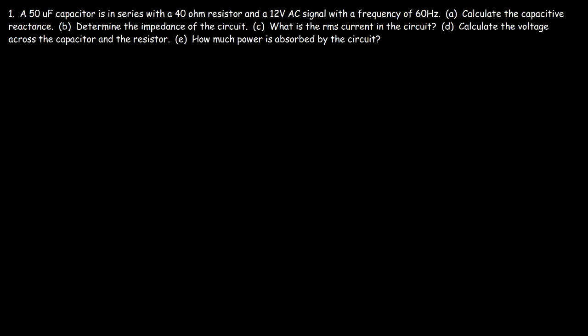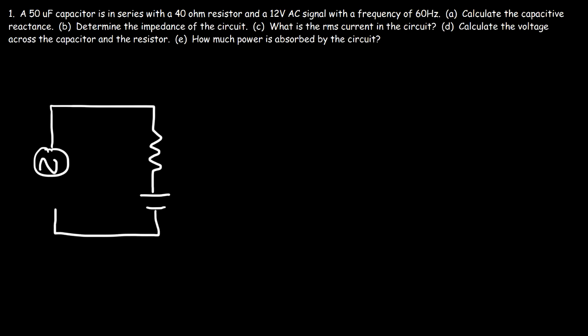In this video I'm going to focus on capacitive reactance. We have a 50 microfarad capacitor in series with a 40 ohm resistor and a 12 volt AC signal that has a frequency of 60 Hertz. Here's the resistor and here is the capacitor — a 40 ohm resistor, a capacitance of 50 microfarads, and a 12 volt AC signal at 60 Hertz.